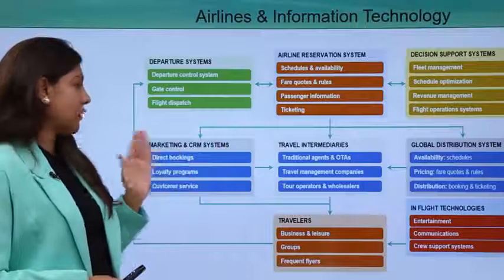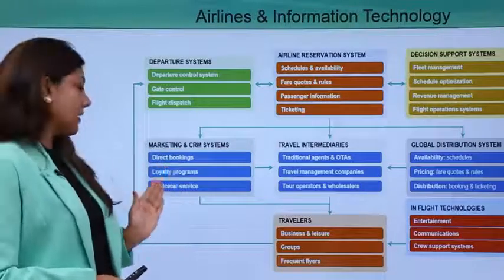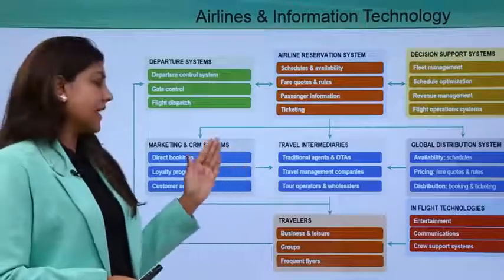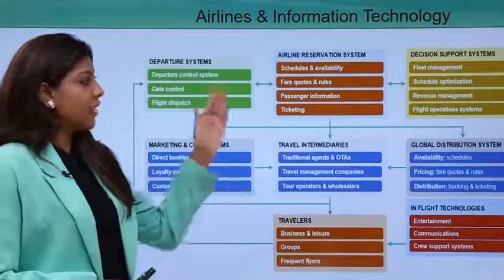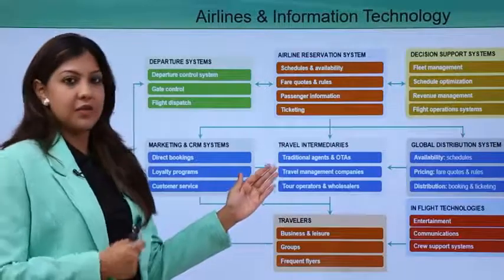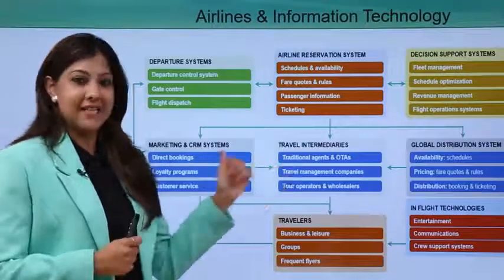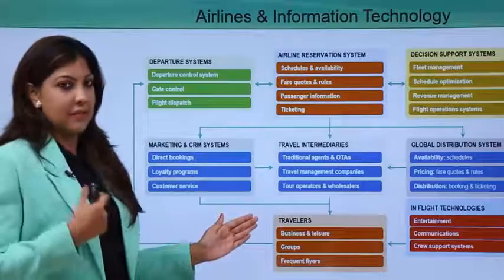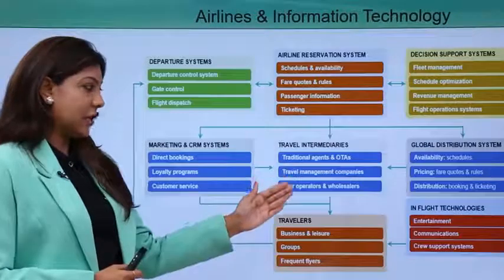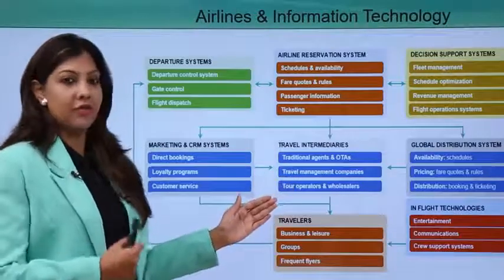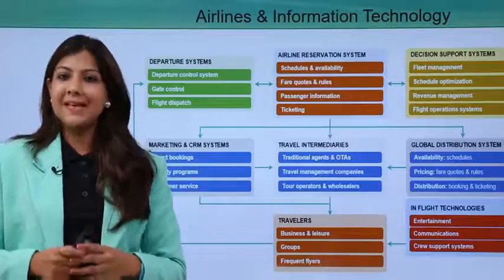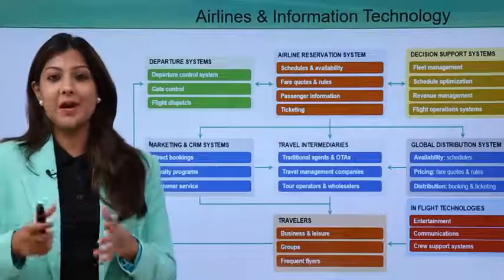Under marketing and CRM systems we have direct bookings, loyalty programs, and customer service. Under travel intermediaries we have traditional agents, OTAs, travel management companies, tour operators, and wholesalers. Under global distribution system we have availability, schedules, pricing (fare codes and rules), and distribution covering booking and ticketing. For travellers we have business and leisure travellers, groups, individuals, and frequent flyer programs. Under in-flight technologies we have entertainment, communication, and crew support systems. This gives a complete overview of the communication between different departments in aviation.